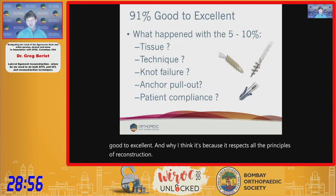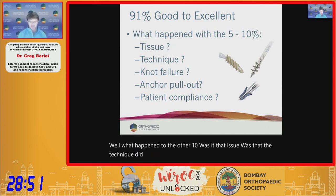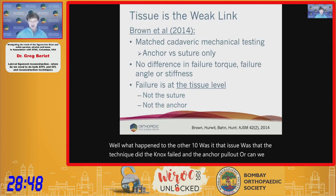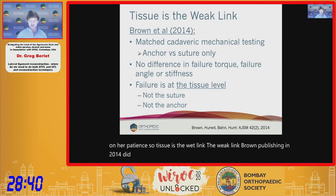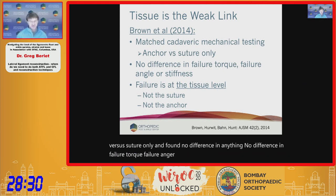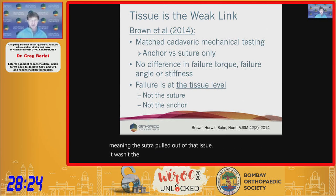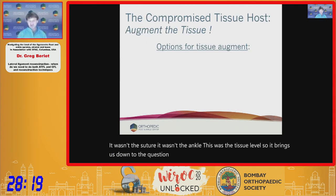What happened to the other 10%? Was it the tissue, technique, knot failure, anchor pullout, or patient factors? Brown's 2014 cadaveric mechanical testing compared anchor versus suture-only fixation and found no difference in failure torque, failure angle, or stiffness. Failure occurred at the tissue level — the suture pulled through the tissue — meaning tissue is the weak link, not the anchor or suture.